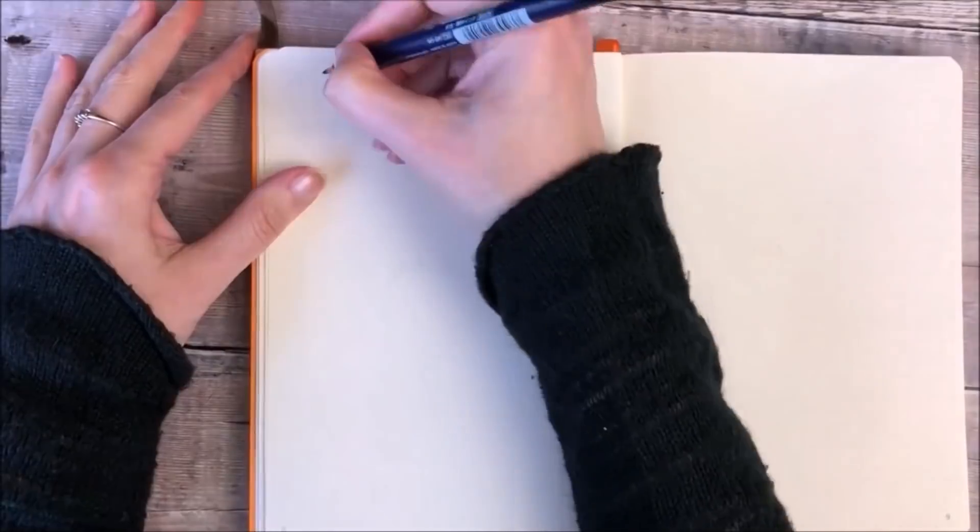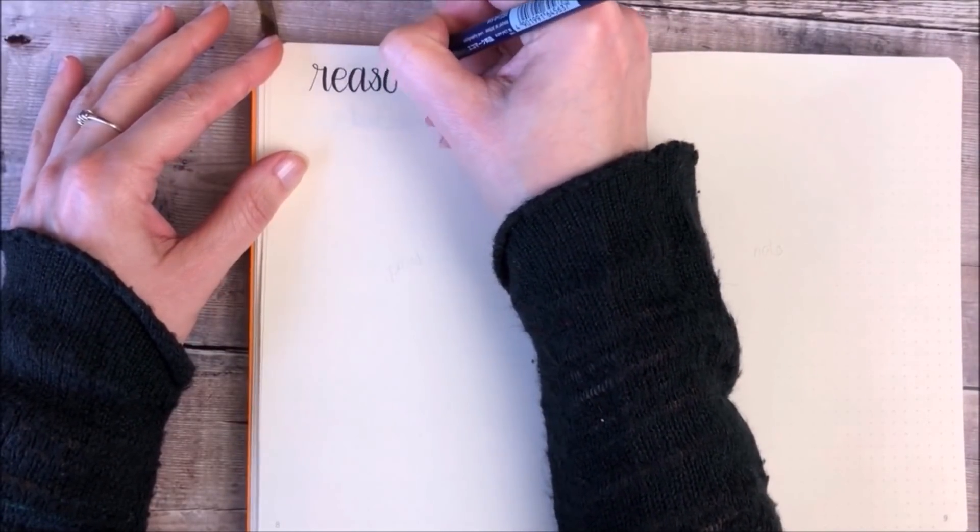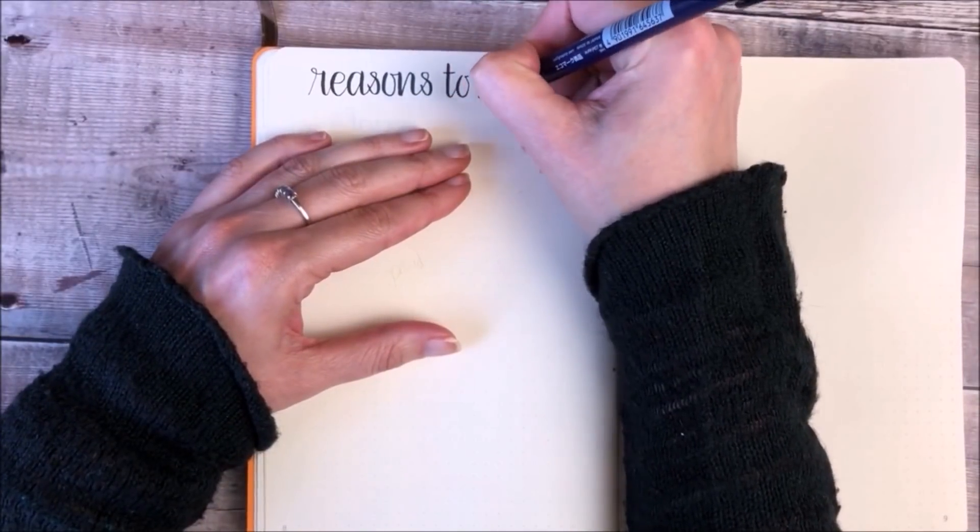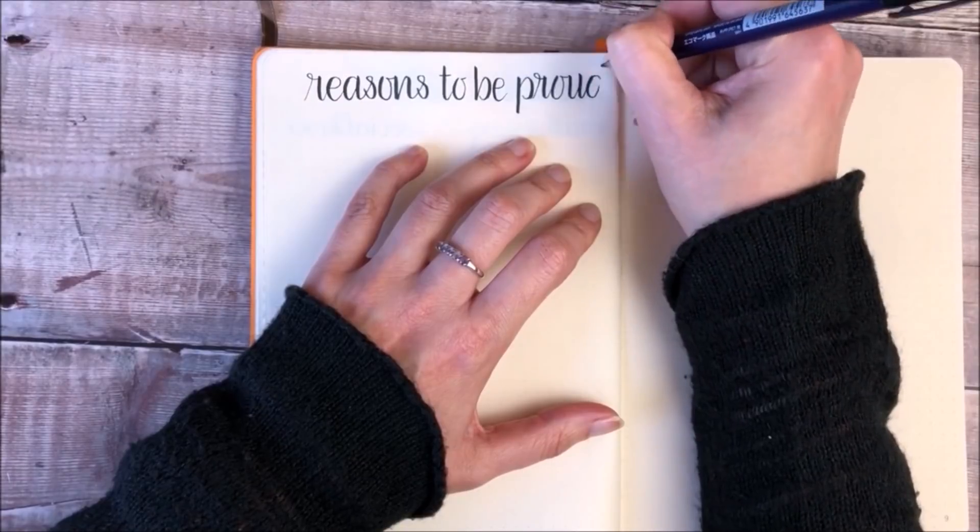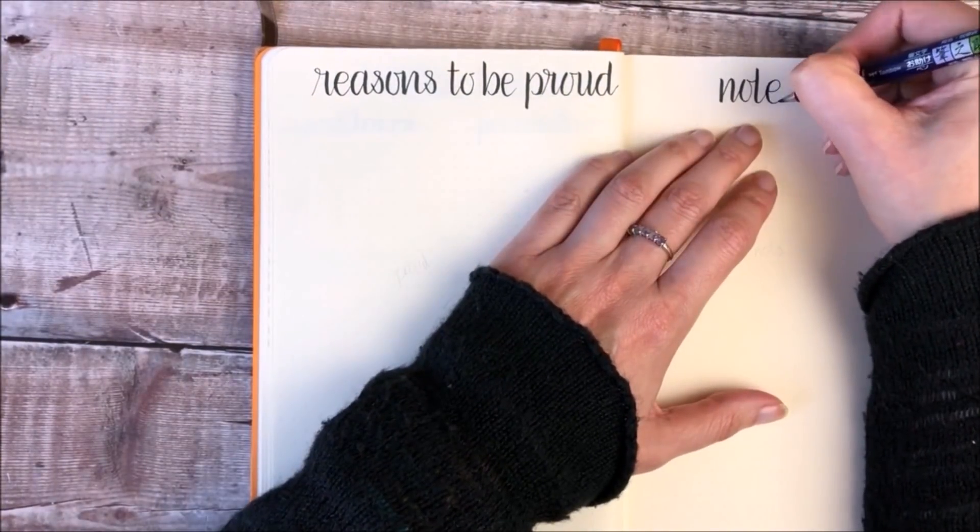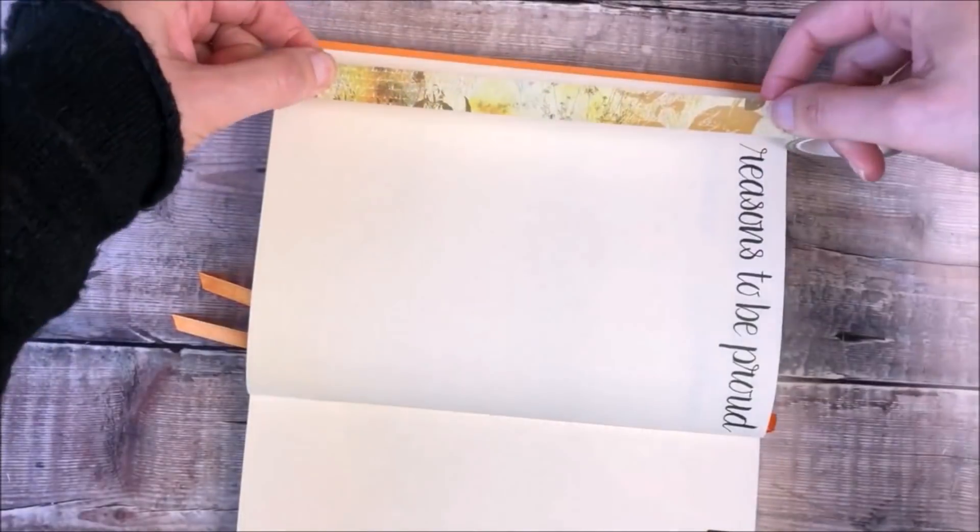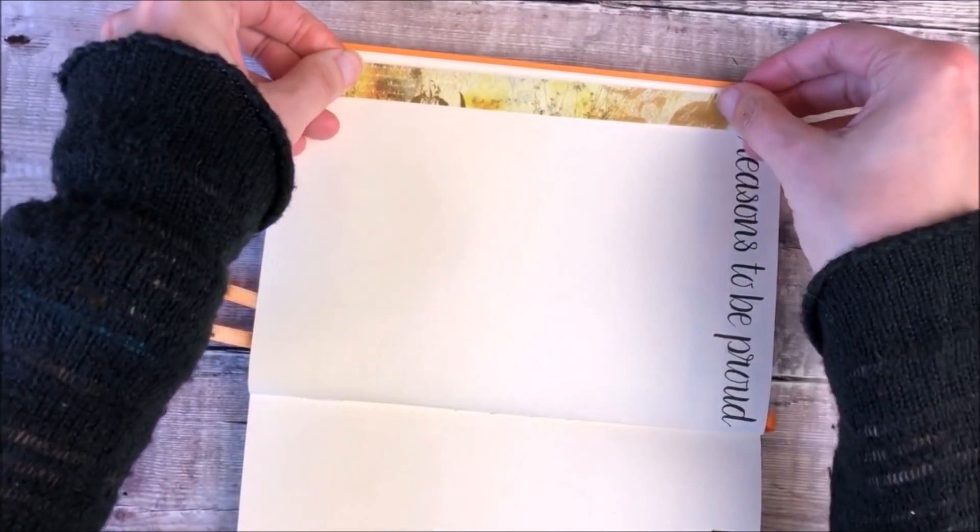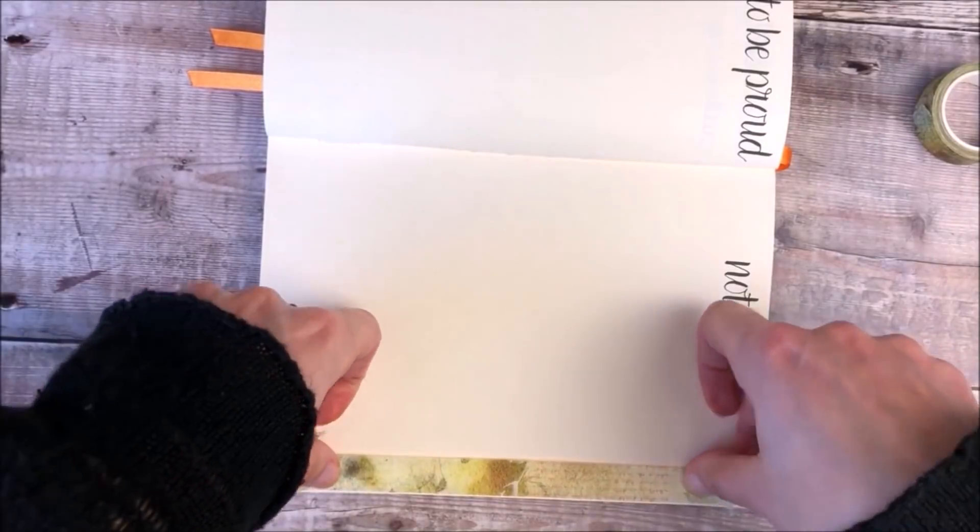The final pages that I'm setting up are my reasons to be proud and my notes pages. This is where I've tried to get in the habit of offering myself a little praise each evening, no matter how many things might have gone wrong. I always think there's something that I should be proud of, and it's really nice to just take a moment and record those on my journal pages.